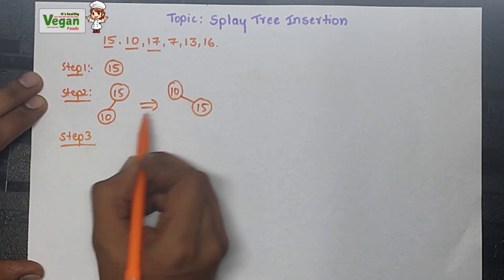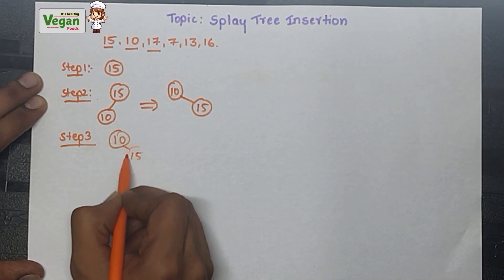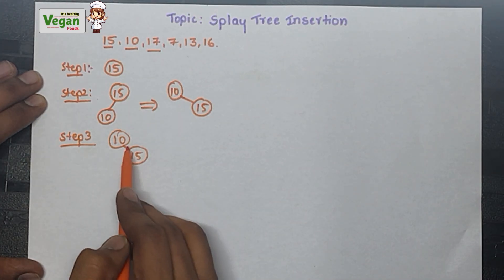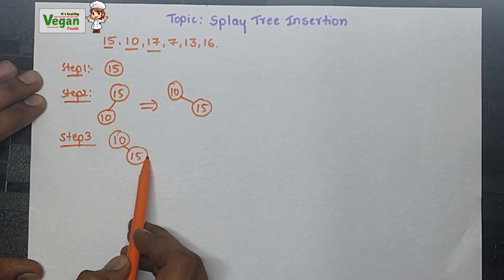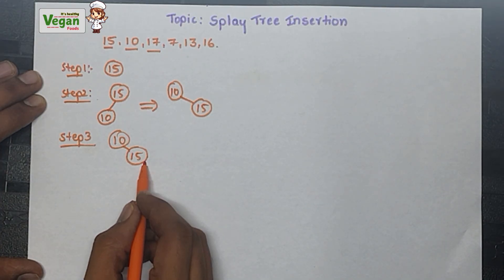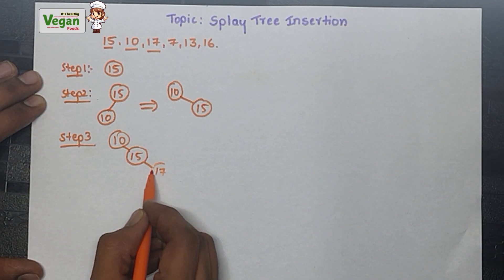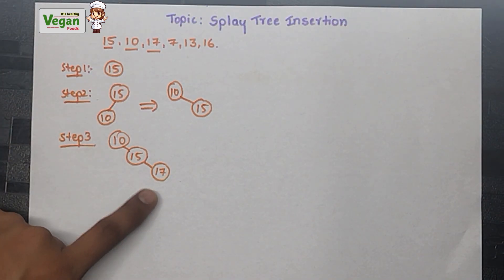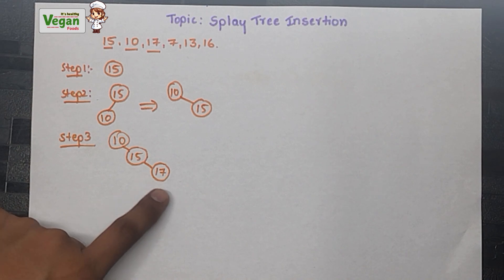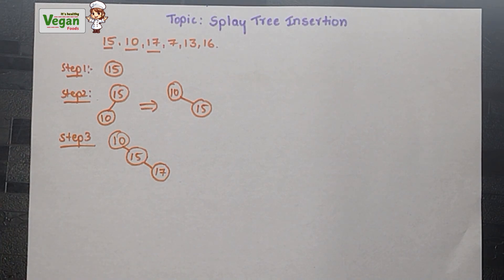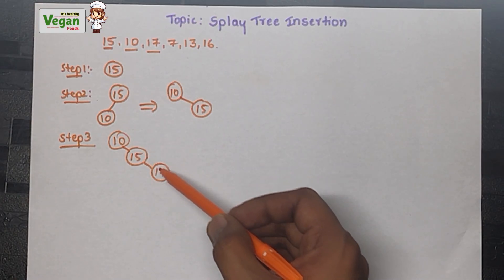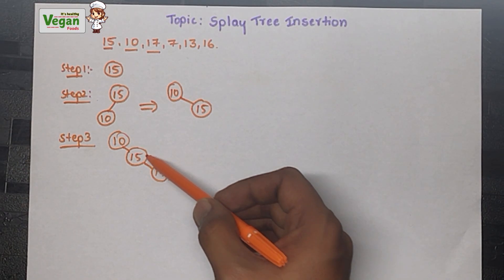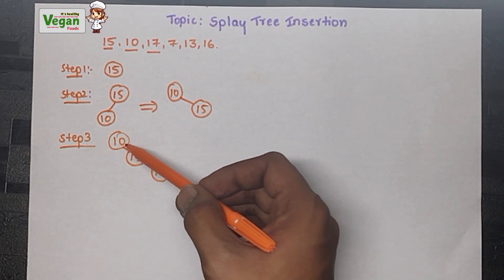Now what is the next element? 17. In step 3, 10 and 15 remain the same. Compare 17 with 10: 17 is greater than 10, so it goes to the right side. 17 is also greater than 15, so it goes to the right side again. Now the newly inserted element must undergo the splay operation - it must become the root node. Currently it is at level 2, so it must go from level 2 to level 1, then level 1 to level 0.